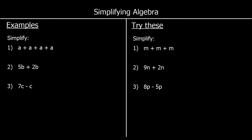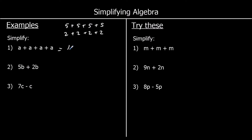Let's look at adding some terms now. The first one says a plus a plus a plus a. If we've got the same number added together four times — like 5 plus 5 plus 5 plus 5, or 2 plus 2 plus 2 plus 2 — we can say that's 4 times 5 or 4 times 2. So a plus a plus a plus a is the same as 4 times a, which we write as 4a.